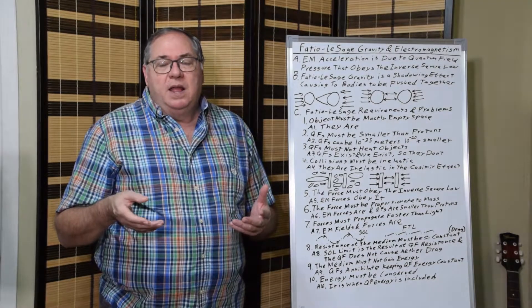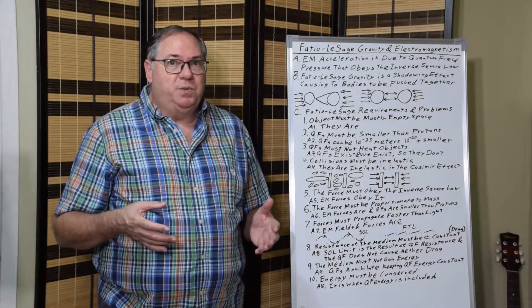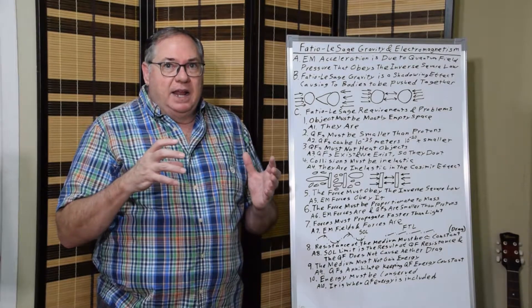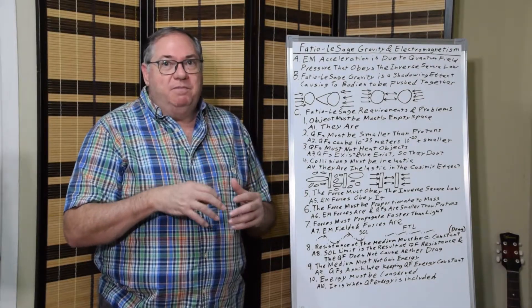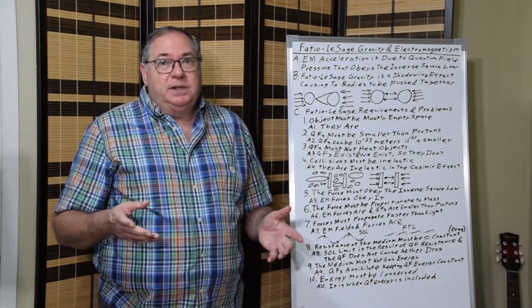So that means condition one is met. And then three, the quantum field must not heat objects. One of the major objections was in a kinetic type theory that if you had particles hitting the Earth, for example, it would vaporize the Earth because it would transmit heat.